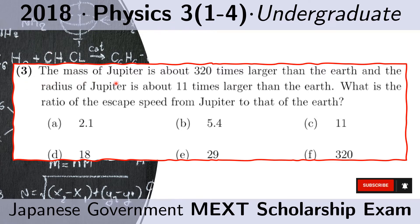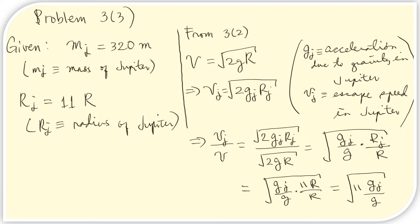Question 3. The mass of Jupiter is about 320 times larger than the Earth, and the radius of Jupiter is about 11 times larger than the Earth. What is the ratio of the escape speed from Jupiter to that of the Earth? Let us write down what is given: M sub J denotes the mass of Jupiter, R sub J the radius of Jupiter. The mass of Jupiter is 320 times the mass of Earth, and the radius is 11 times that of the Earth. From problem 3.2, we know the escape speed from the Earth.